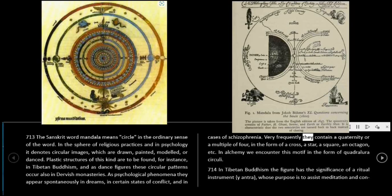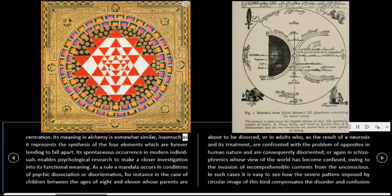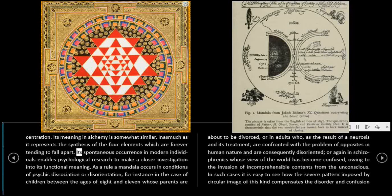Very frequently, they contain a quaternity, or a multiple of four, in the form of a cross, a star, a square, an octagon, etc. In alchemy, we encounter this motif in the form of quadratura circuli. 714: In Tibetan Buddhism, the figure has the significance of a ritual instrument, yantra, whose purpose is to assist meditation and concentration. Its meaning in alchemy is somewhat similar, inasmuch as it represents the synthesis of the four elements which are forever tending to fall apart. Its spontaneous occurrence in modern individuals enables psychological research to make a closer investigation into its functional meaning.